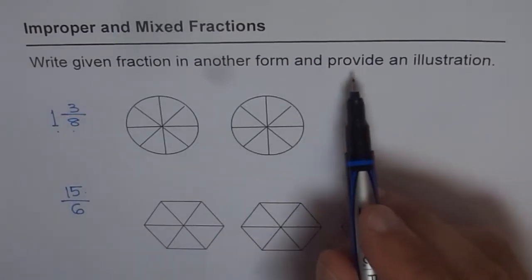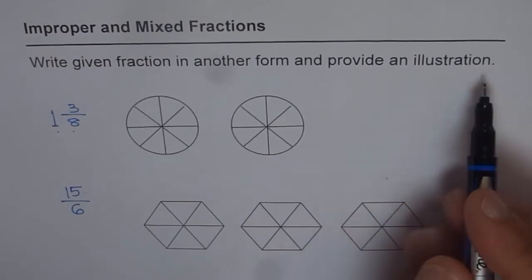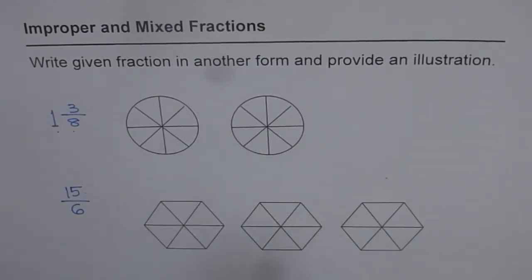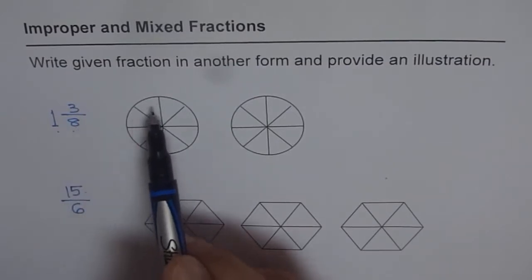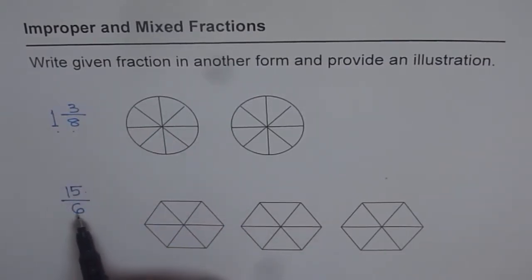The second part is, provide an illustration. So to help you out, we already have some figures. Since each part is divided into 8, we have a circle divided into 8 portions. In this case, it is 6. So we have a hexagon divided into 6 equal similar triangles.